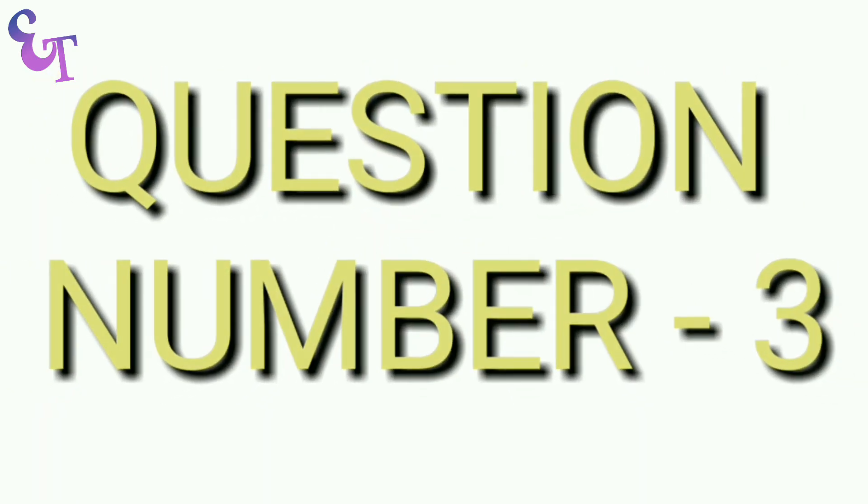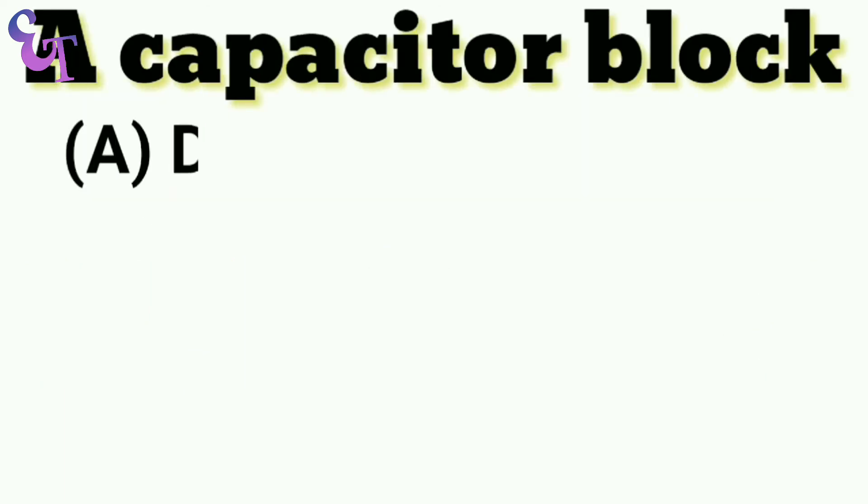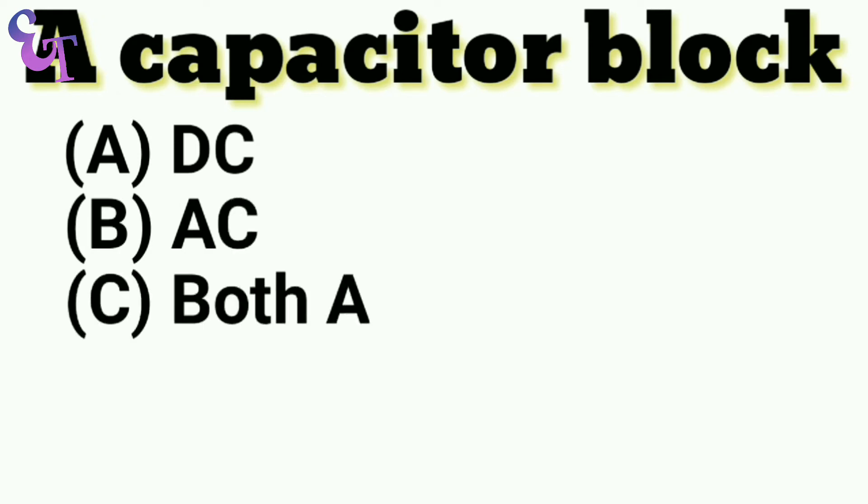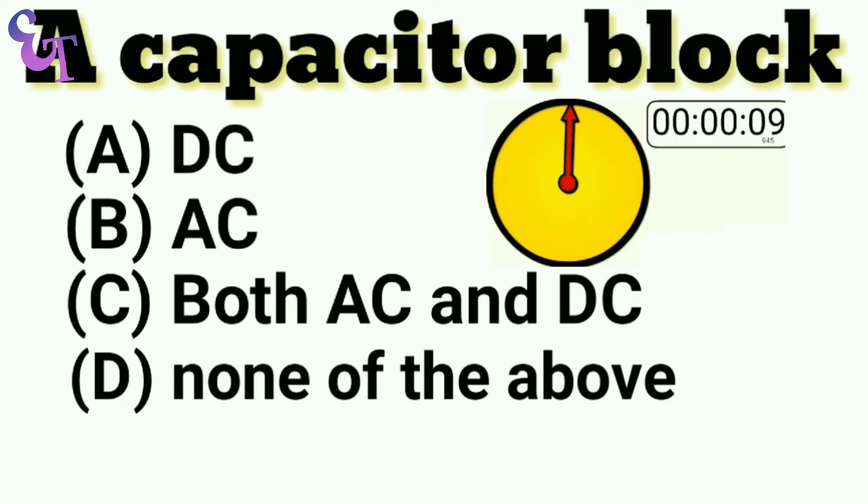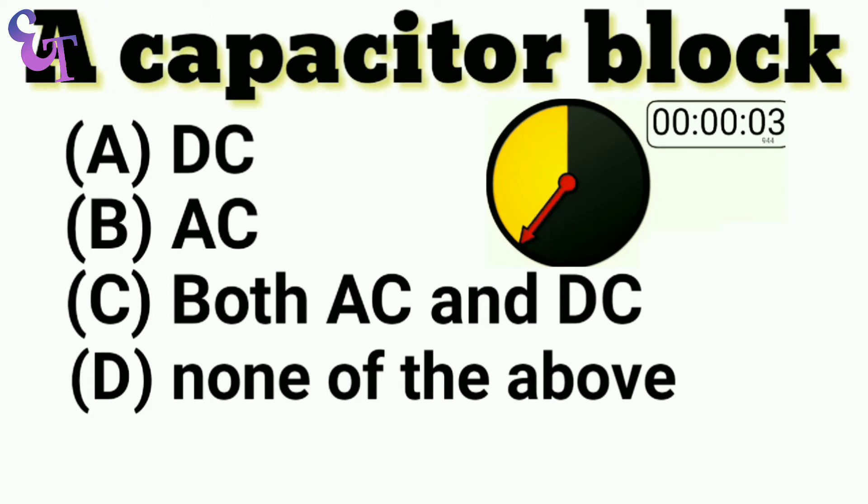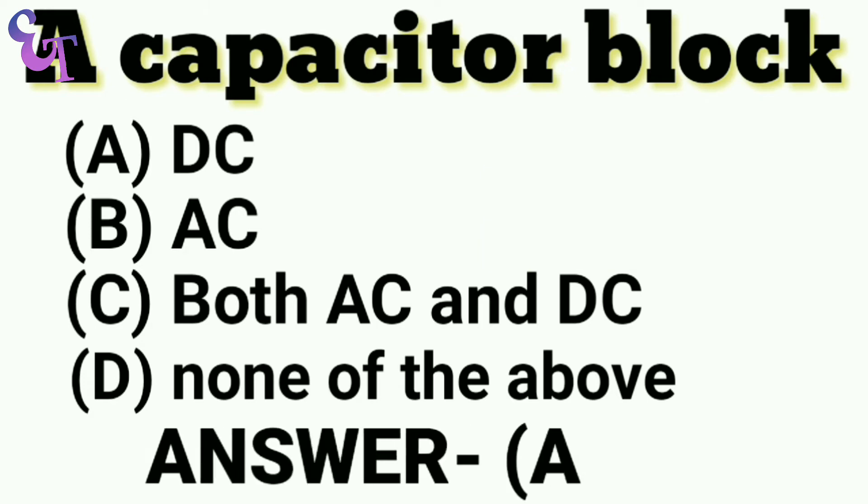Question number 3: A capacitor blocks A. DC, B. AC, C. Both AC and DC, D. None of the above. The right answer is A. DC.